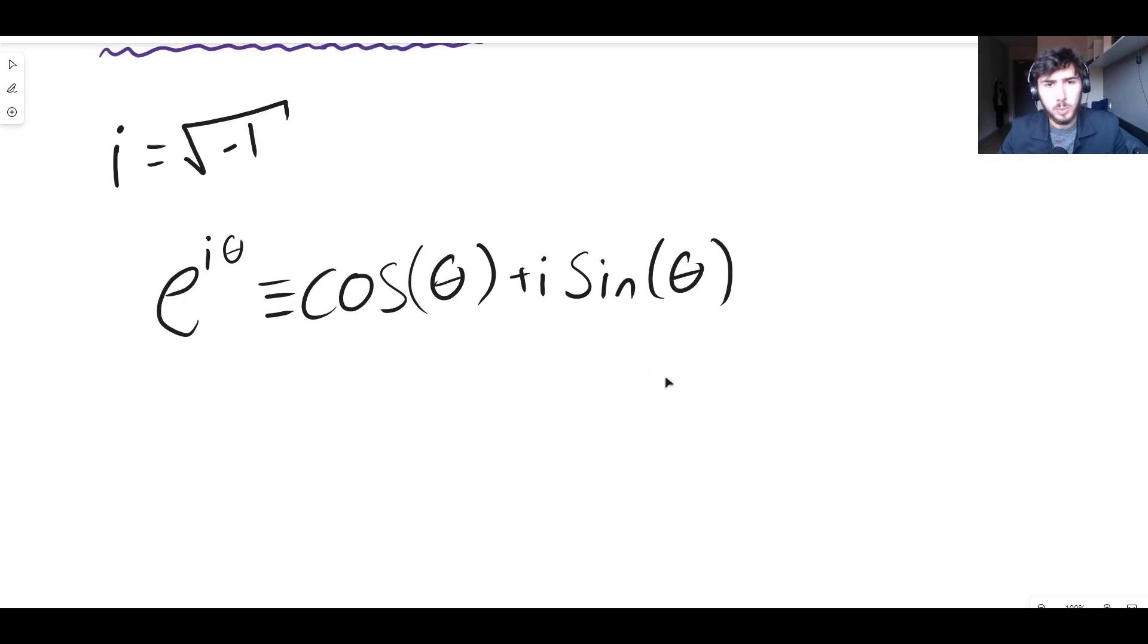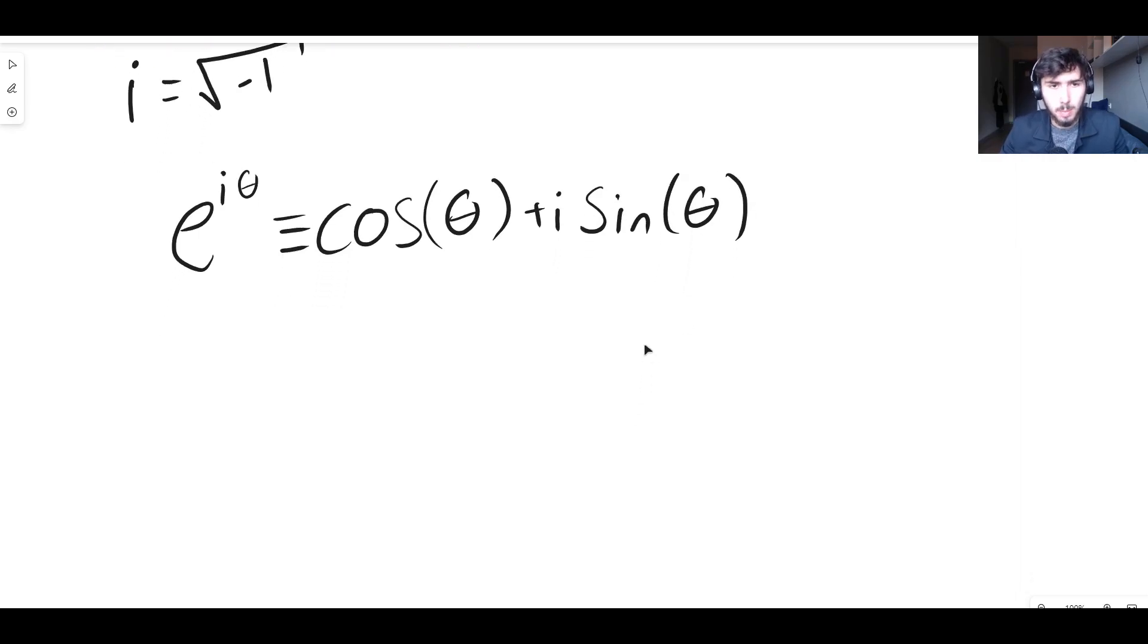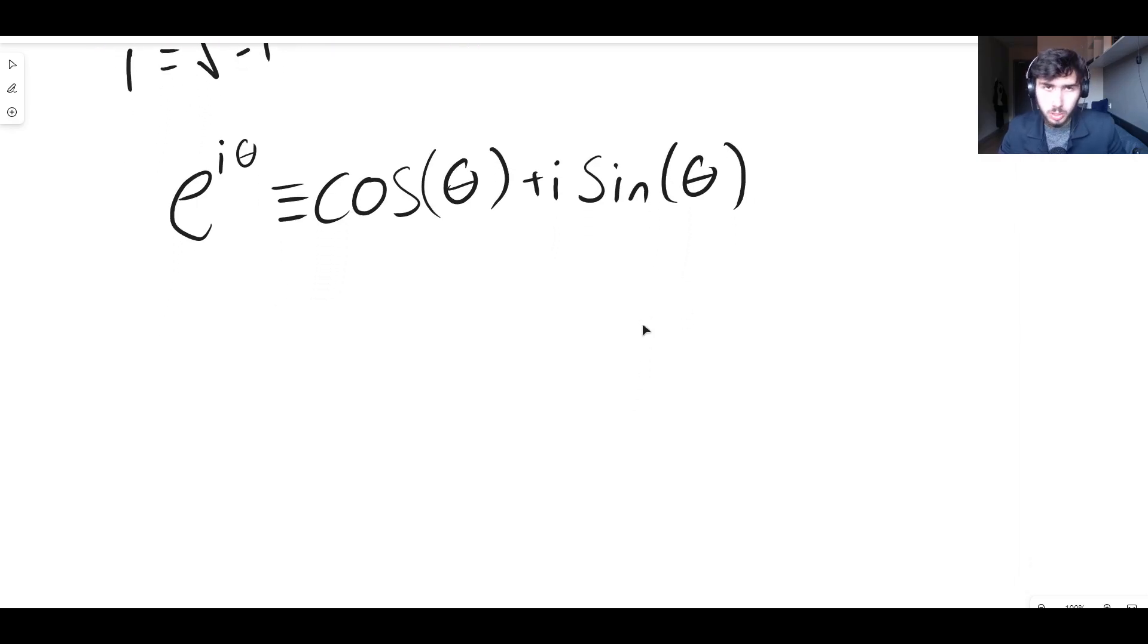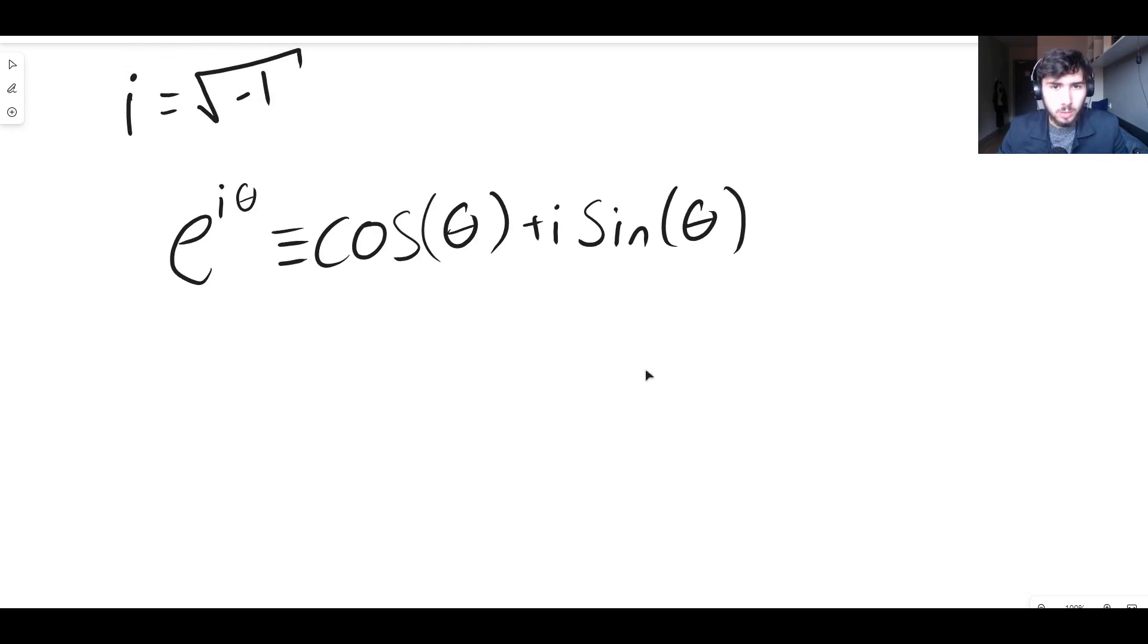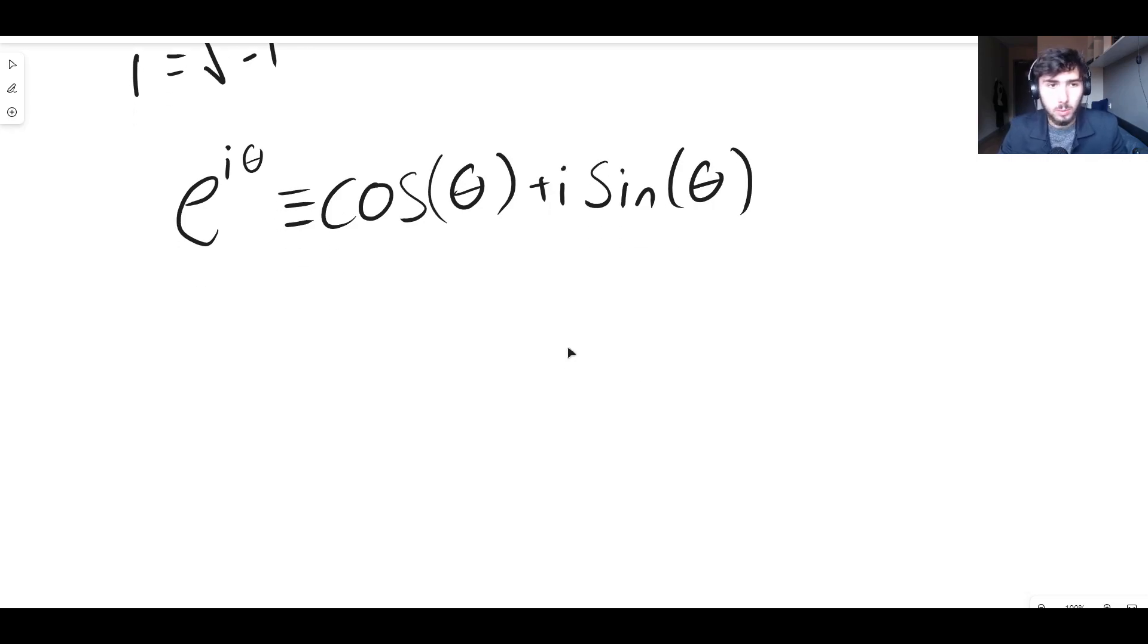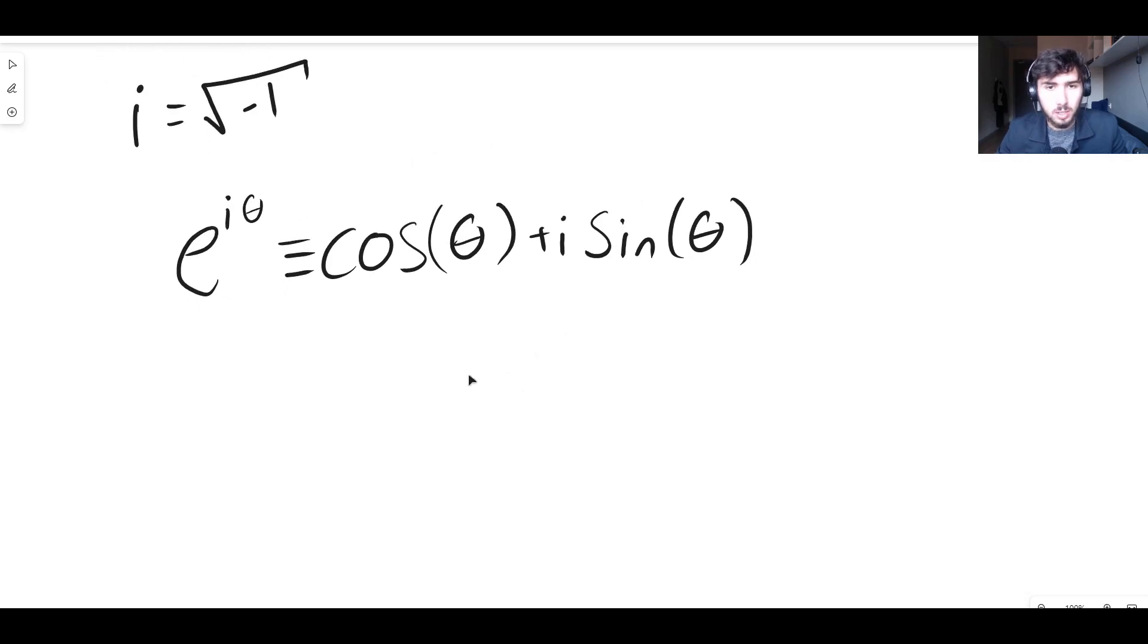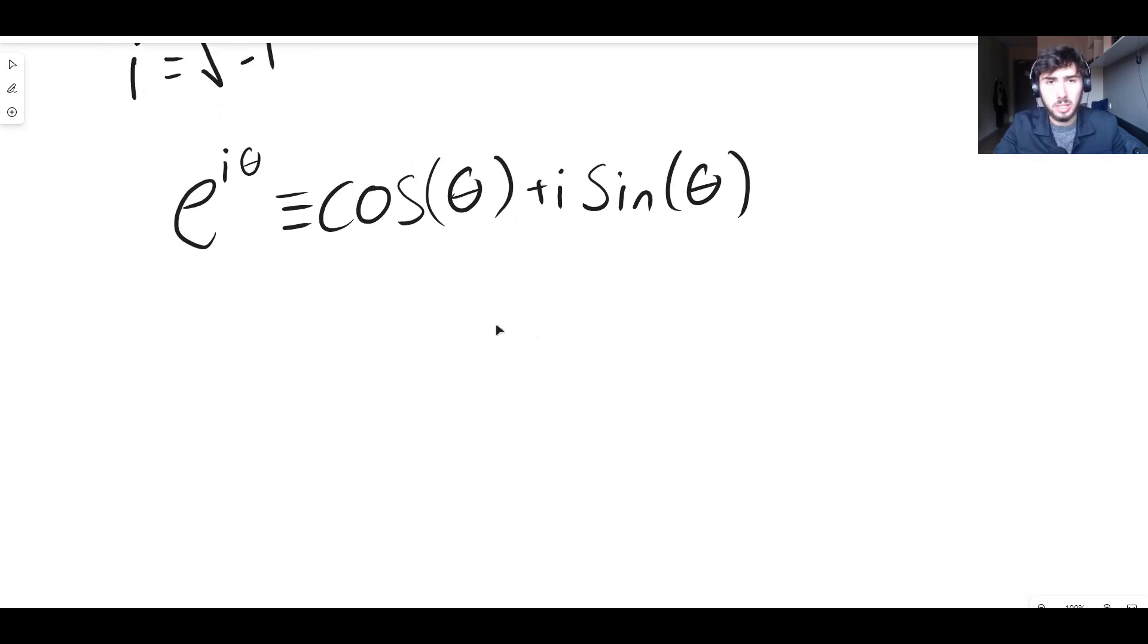So why do we need to know this to calculate i to the power of i? Well, I'll tell you why. Because we can actually express just the number i in terms of e to the i theta, where theta is going to be some number that we're going to assign that's going to allow us to get i on one side.